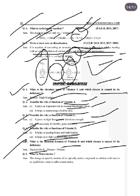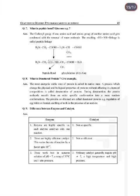Chemical name of vitamin D: ergocalciferol. Deficiency disease of vitamin D: rickets. What is mutarotation? The change in specific rotation of an optically active compound in solution with time to an equilibrium value is called mutarotation.